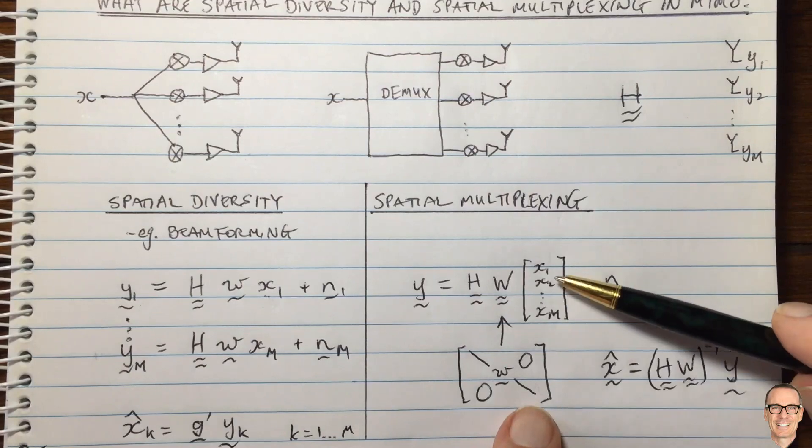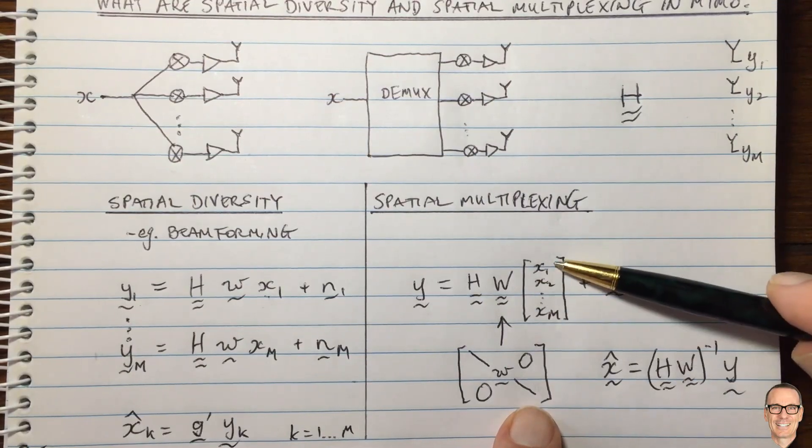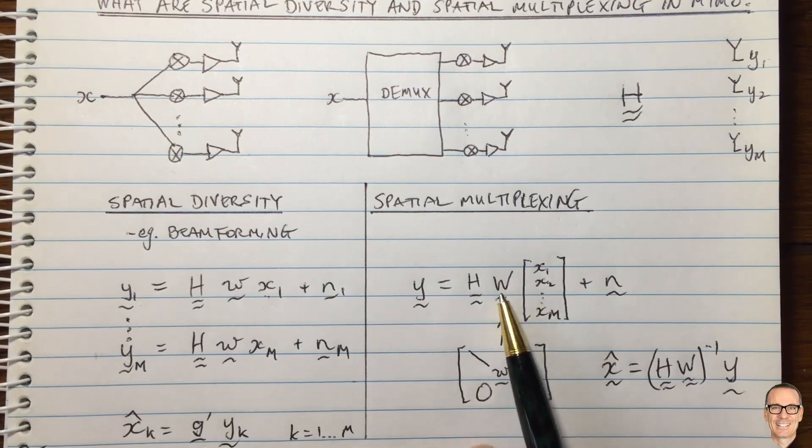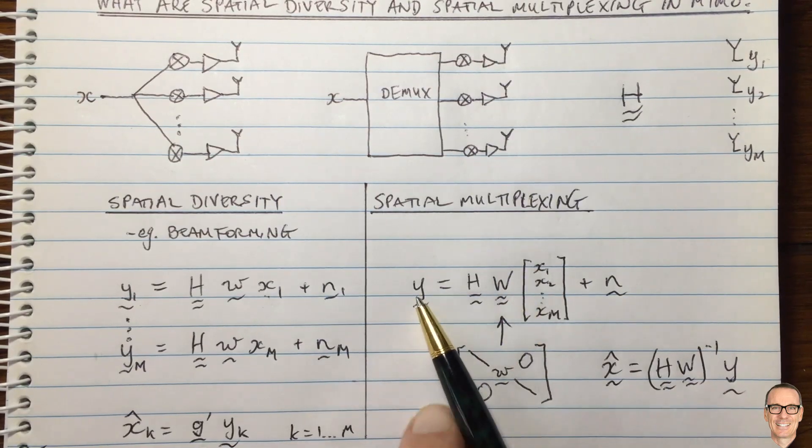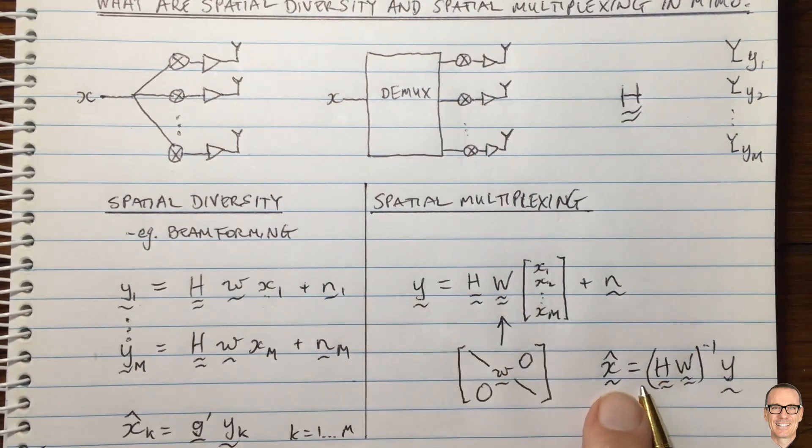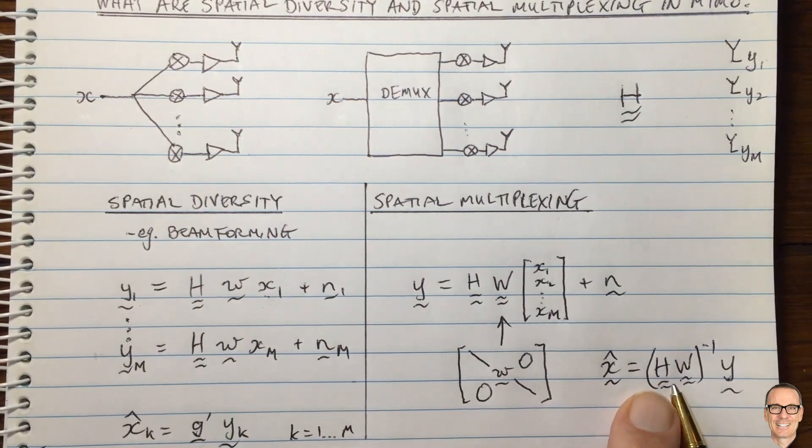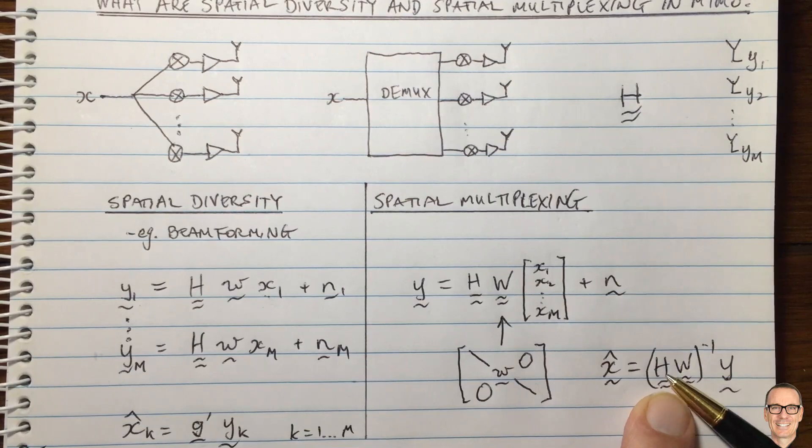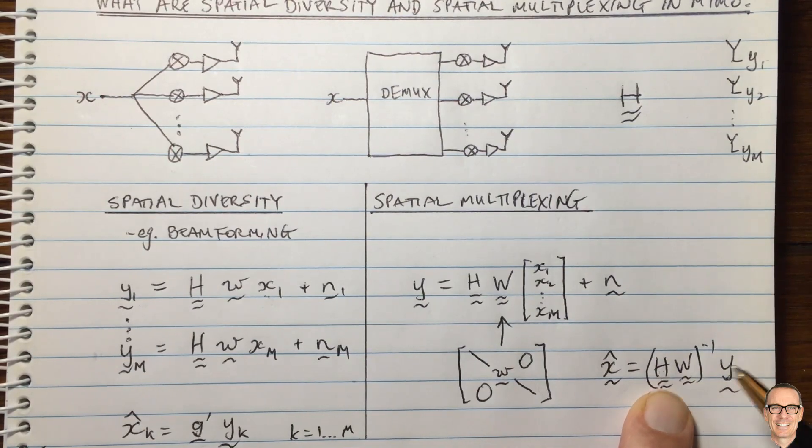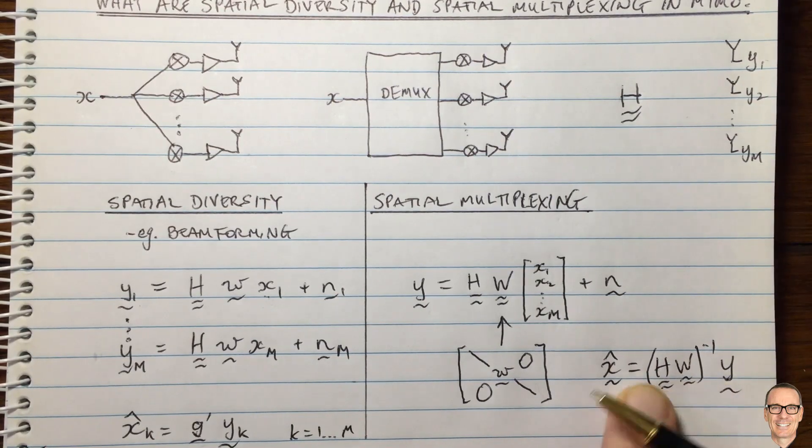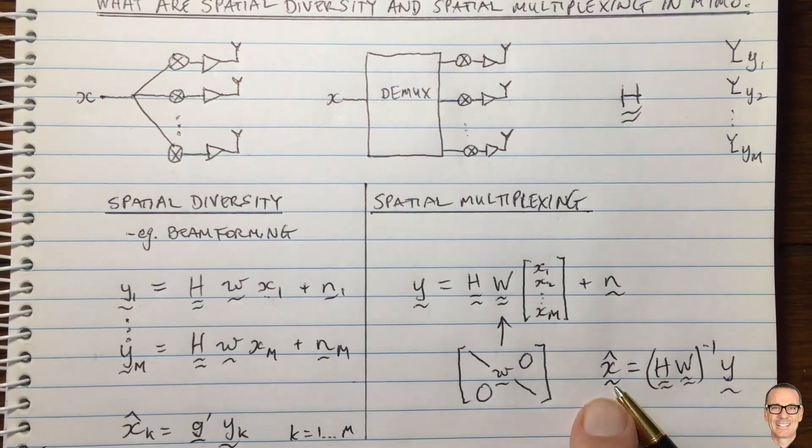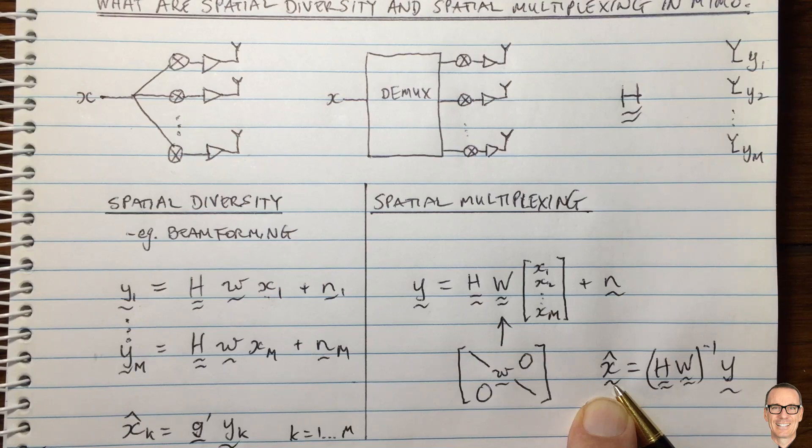So in this case, you have the problem of unjumbling them all, because they're all sent in parallel, that's the multiplexing. So in this case, your receiver takes the received signal here, and to get the estimates of the input, takes the H and the W combination and inverts it. So if you have the channel matrix and the W matrix, which in this case is a W on the diagonal, then you take the inverse of this to recover your symbol estimates.